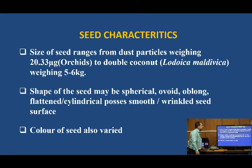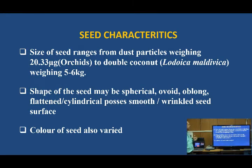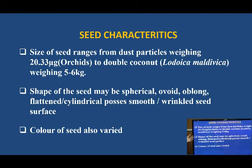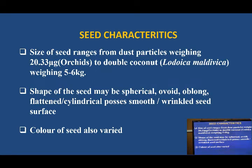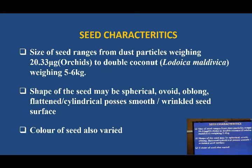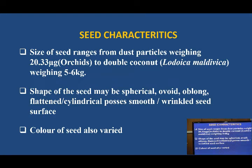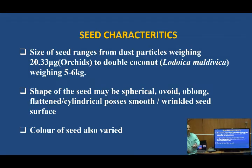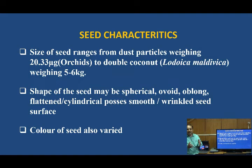While we talk about the seed characteristics, there are different features of seeds — the size of seeds, the shape of the seeds, and the color of the seeds. There are large variations among different characteristic features of seeds. As we can see in the slides, the size of the seed ranges from the dust particle to that of the double coconuts, weighing 5 to 6 kg. The shape also varies from oblong, flattened, and different types, and the surface of seeds may be wrinkled, smooth, etc.